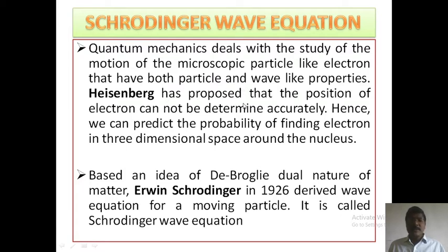Heisenberg proposed that the position of an electron cannot be determined accurately. Hence, we can only predict the probability of finding an electron in three-dimensional space around the nucleus. Based on the idea of de Broglie's dual nature of matter, Irwin Schrödinger in 1926 derived a wave equation for a moving particle. It is called the Schrödinger wave equation.